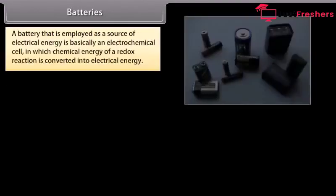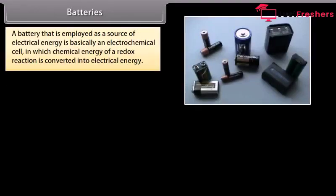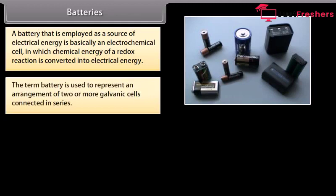Batteries. A battery that is employed as a source of electrical energy is basically an electrochemical cell in which chemical energy of a redox reaction is converted into electrical energy. The term battery is used to represent an arrangement of two or more galvanic cells connected in series.